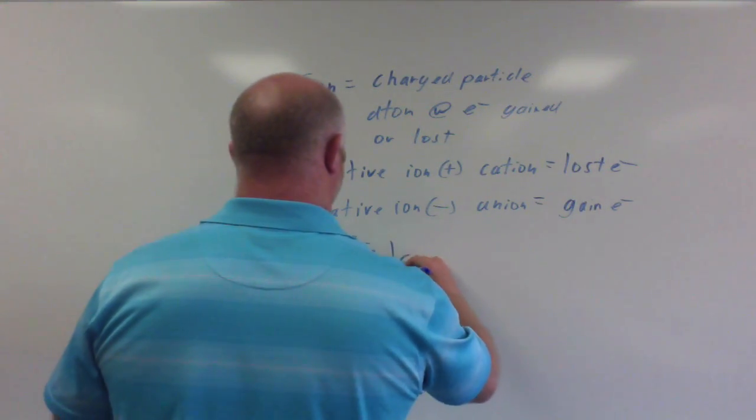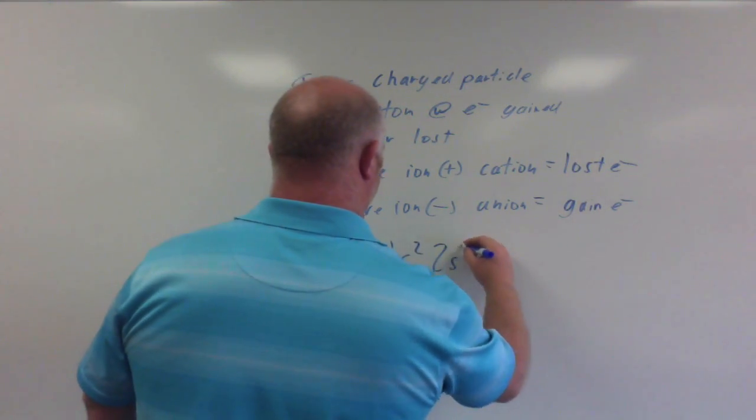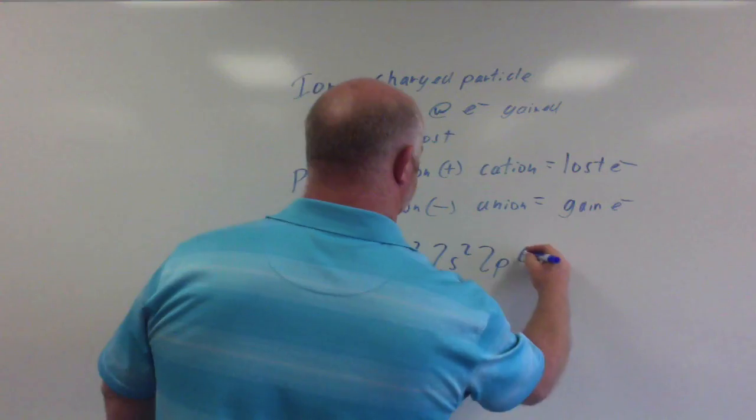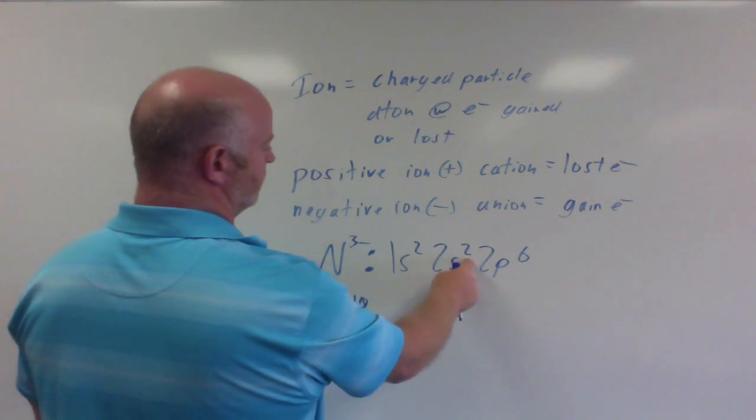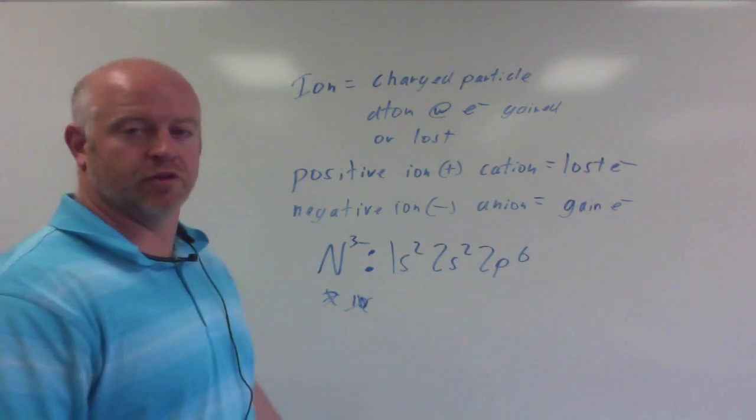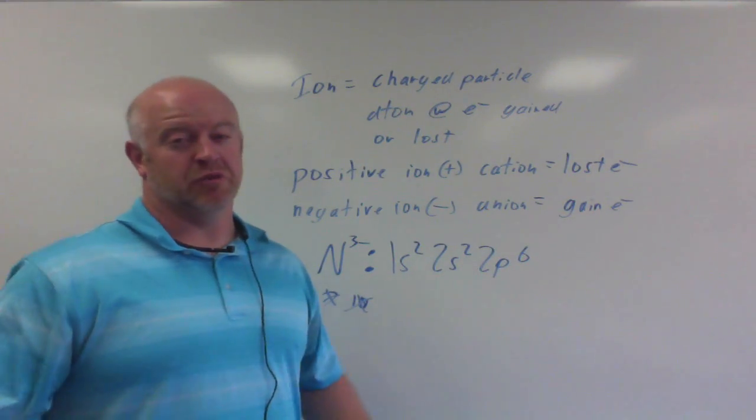So I'm going to start off with 1s2, 2s2, 2p6 for 1, 2, 3, 4, plus 6 for 10 electrons in there. So negative ions are actually really easy.